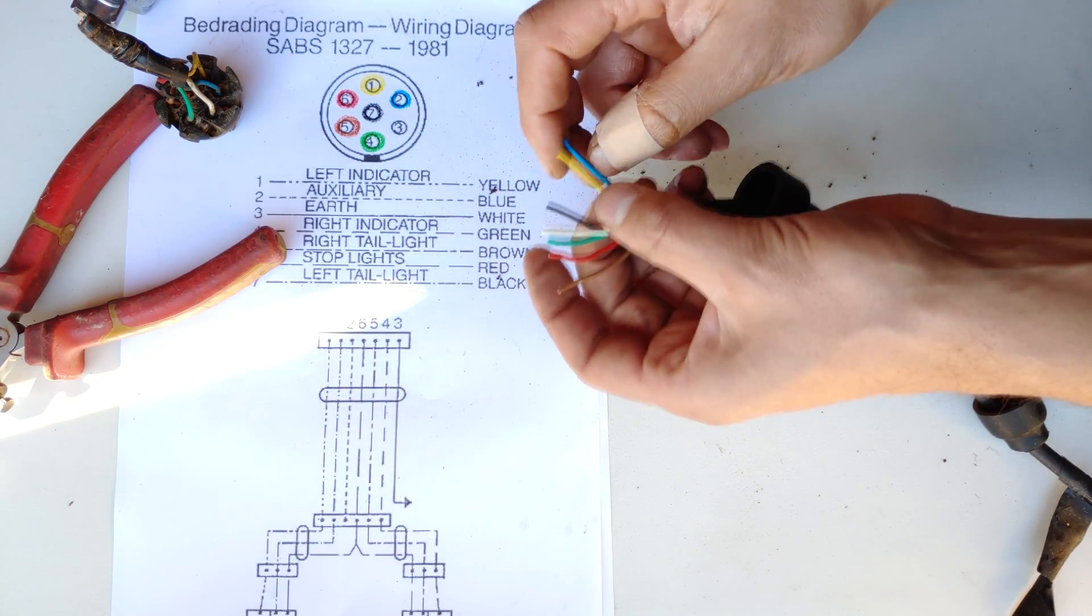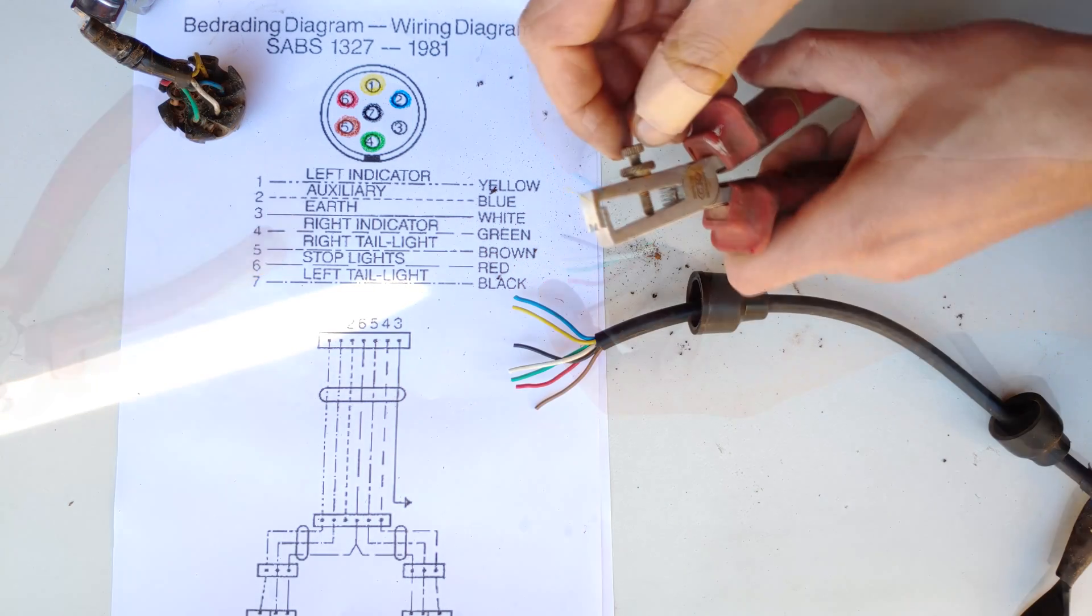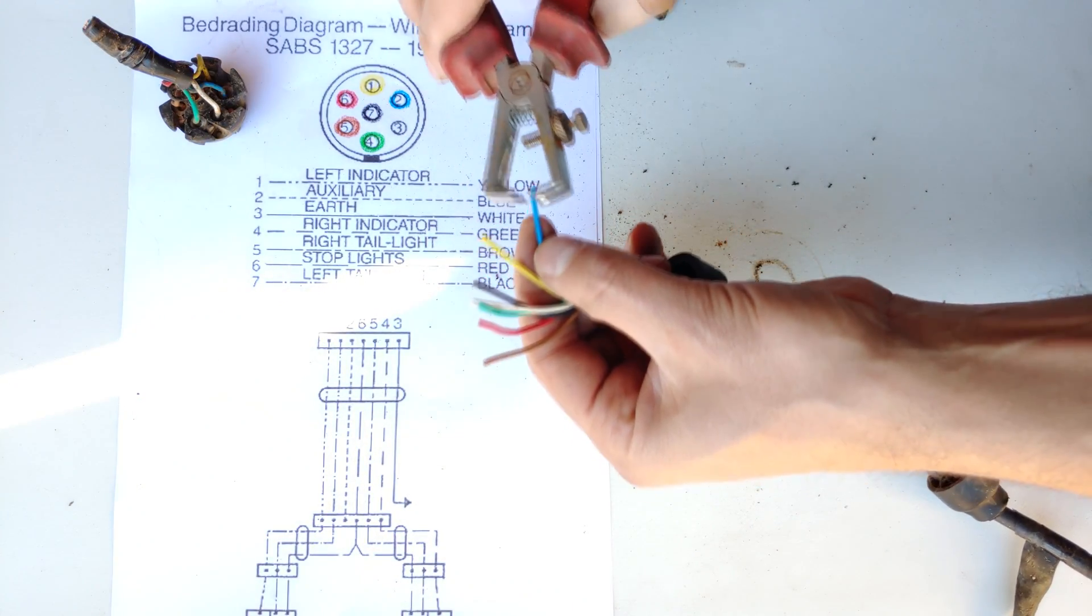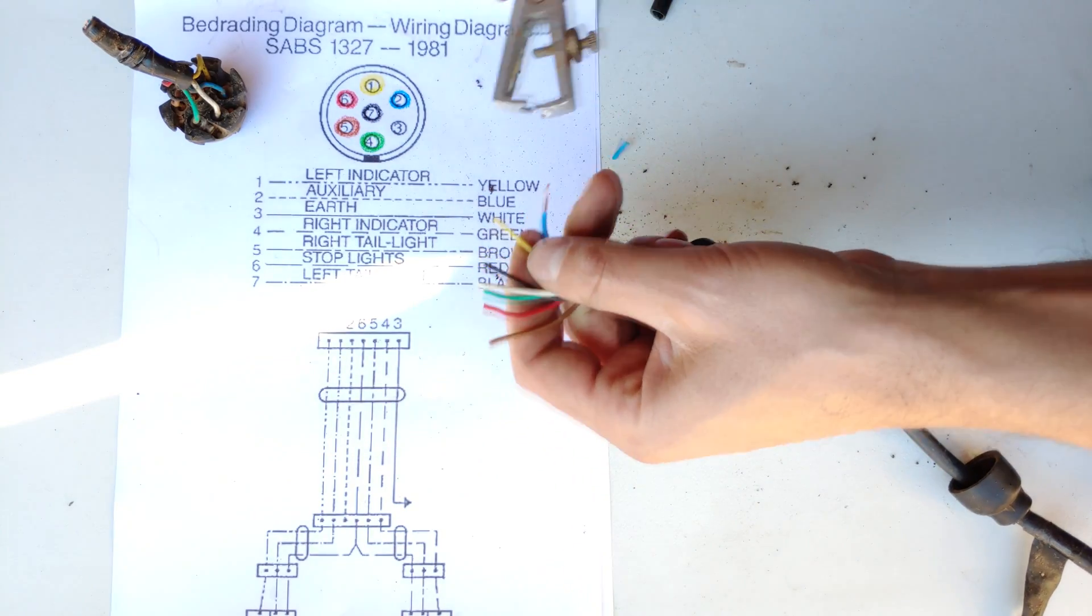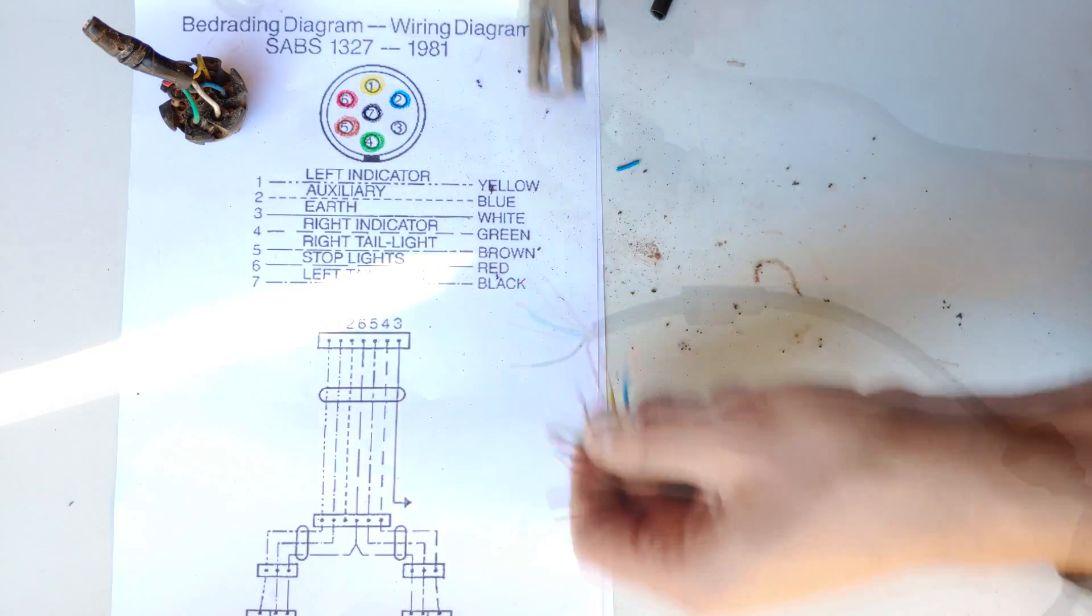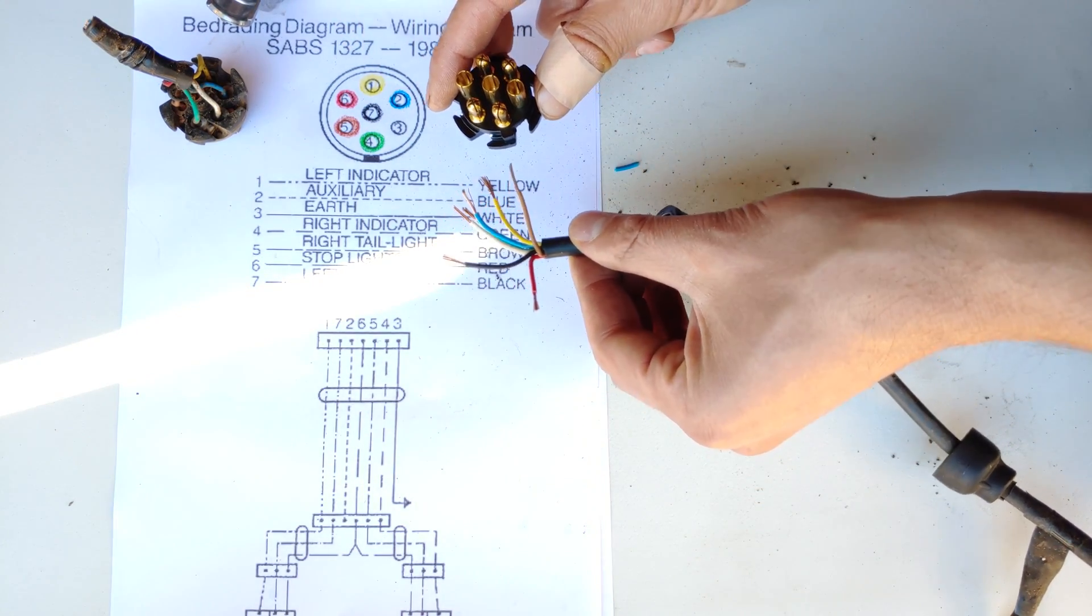What I want to do now is strip a little bit of the insulating covering. I'm going to use a wire stripper and strip about 10 millimeters on each wire. Now you need to look at the standard and make sure you wire this correctly. This is color coded.